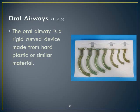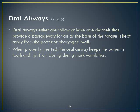Oral airways are rigid curved devices made from hard plastic. There are many types — open lumen, color-coded, Berman airways — but they all have a flange and a curve. The curve lifts the tongue up, and the flange rests on the lips or teeth to keep it in place. If an OPA is too small, it won't reach the airway and could push the tongue back further.